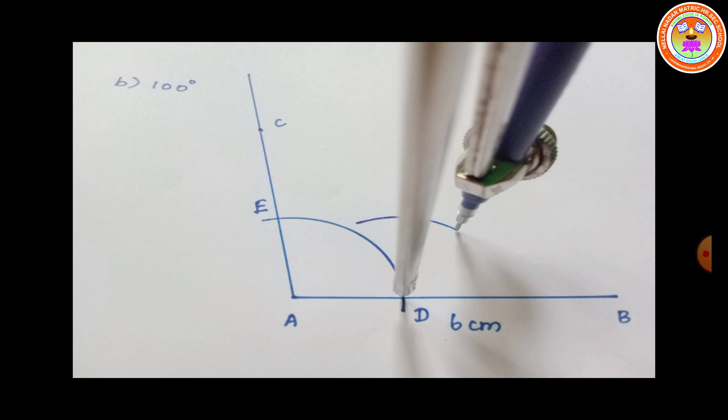Don't change your radius. With the same radius and D as center, draw an arc in the interior of angle BAC. Then with E as center and the same radius, draw another arc to cut the previous arc at F. Mark the point of intersection as F.